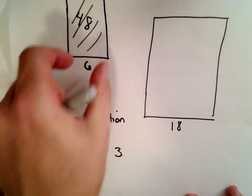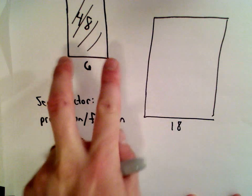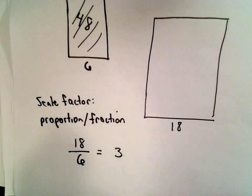So it's basically just saying that as you go from the small rectangle to the large rectangle all the lengths are getting 3 times as large.